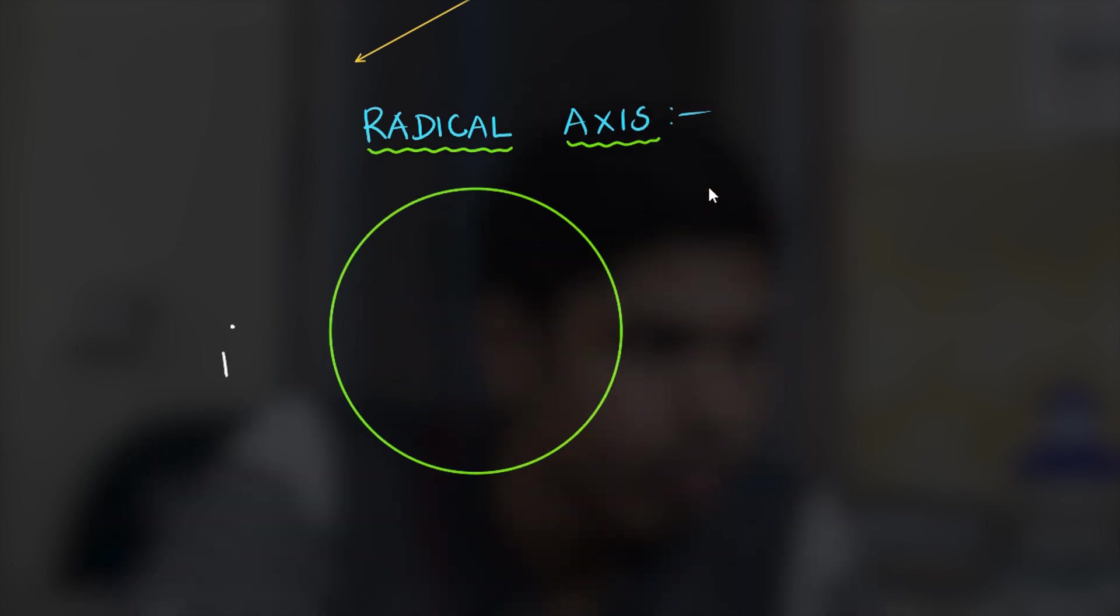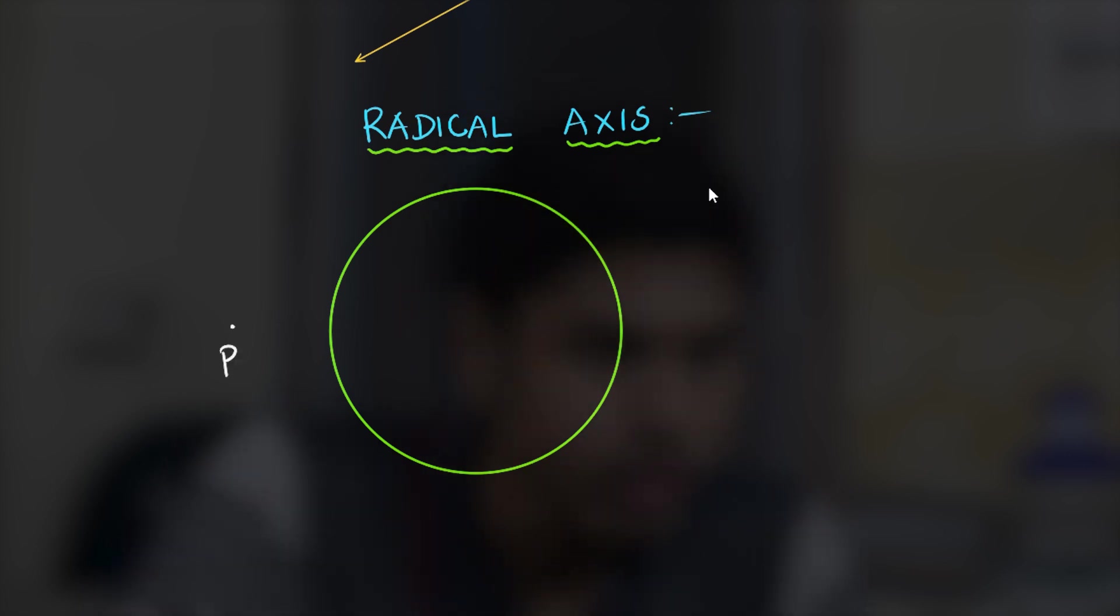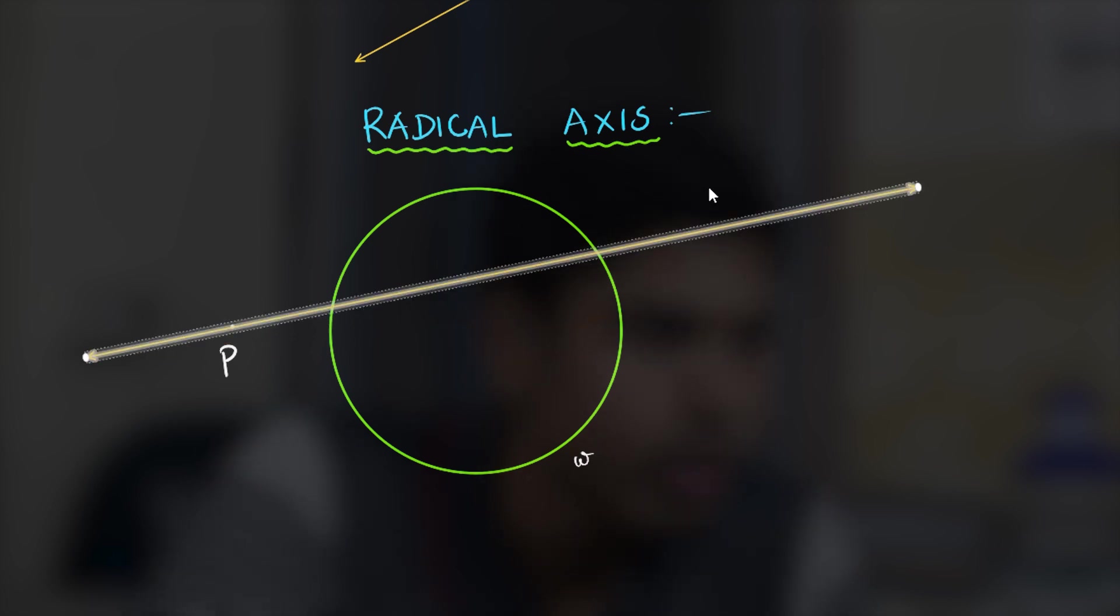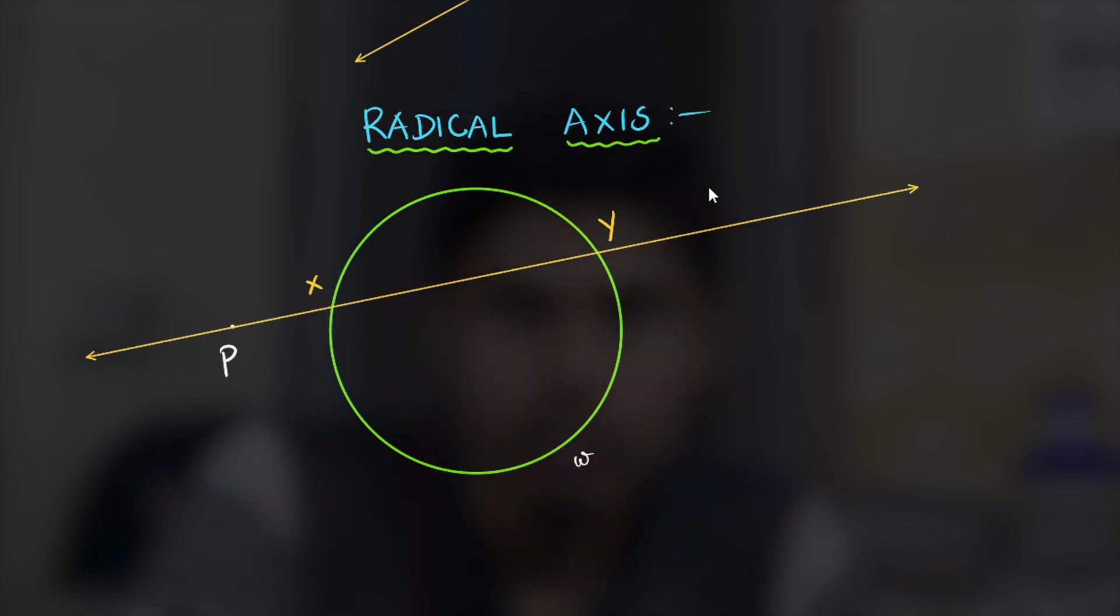So power of a point is defined for a point with respect to a circle. And how is it defined? Consider any line through it to intersect the circle at two points x and y. Maybe it intersects only once in which case it would be a tangent. So suppose it intersects at two points namely x and y then the power of point P with respect to the circle omega equals Px times Py.